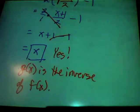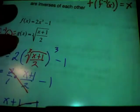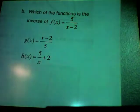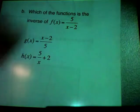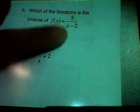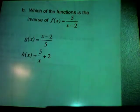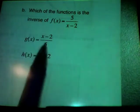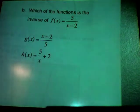Look at the difference between question A versus question B. Question A asks to show that those two functions are inverses of each other. Question B asks: which of the functions is the inverse of f(x) = 5 over (x minus 2)? You could put x here and y there and try to solve for y, but it's a lot more difficult. So instead, can't we just put the candidate function in for x and check if we get x?